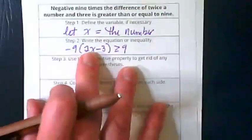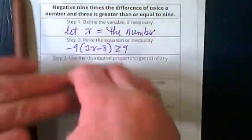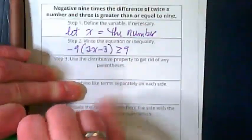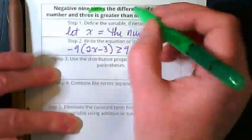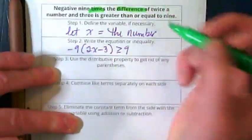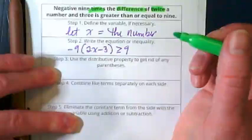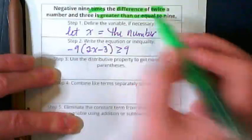We have negative 9 times the difference of twice a number and 3 is greater than or equal to 9. What's our important words here? Well, negative goes with the number. I'm looking for the action words. Times. Difference. Twice. Greater than or equal to.